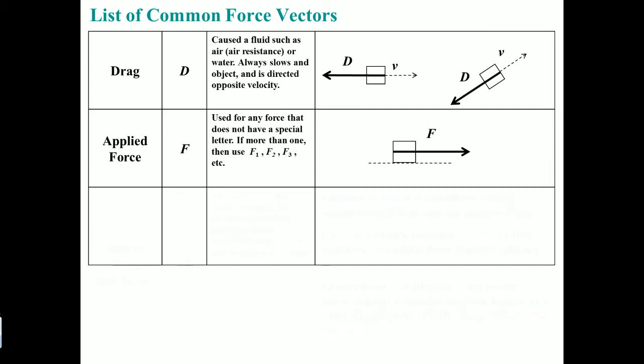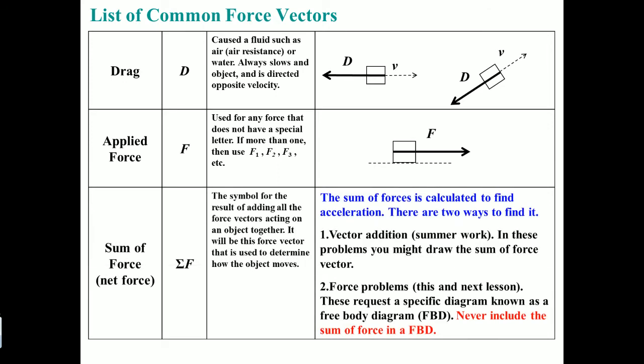Please understand that the summation of the forces is denoted by this symbol, called the summation, and this is when you add all the forces together. The symbol for the result of adding all the force vectors acting on this object together. Now we're going to go over the example of how to draw a free body diagram. This is essential.